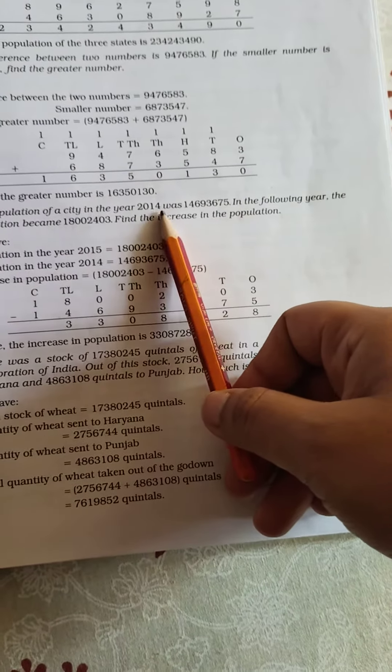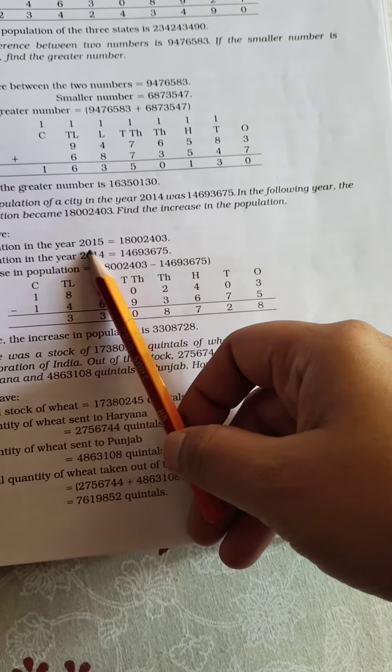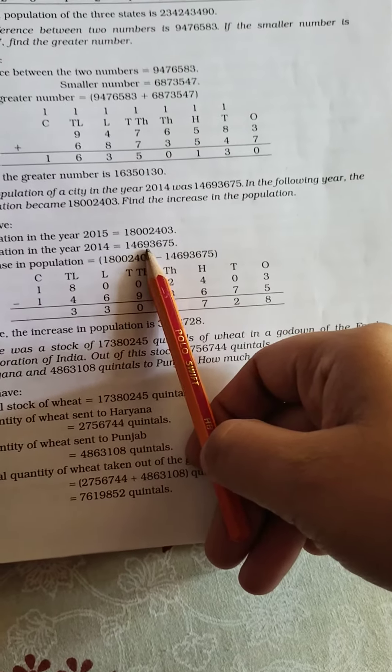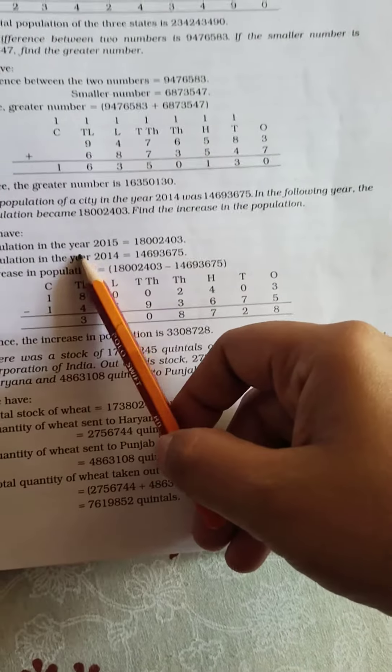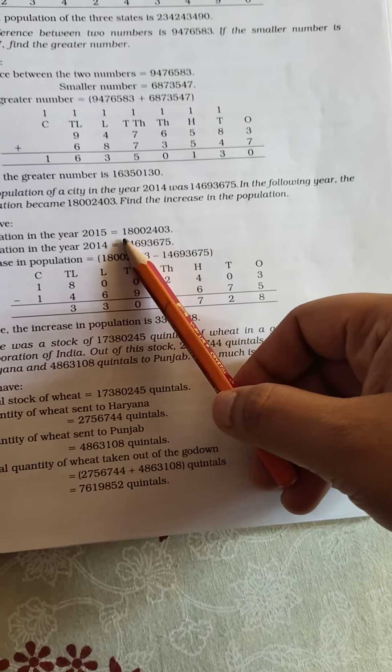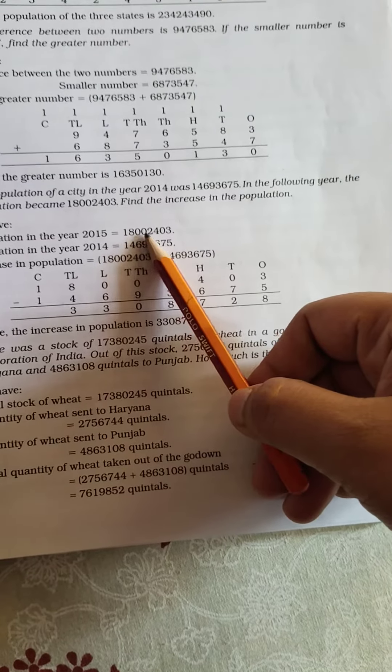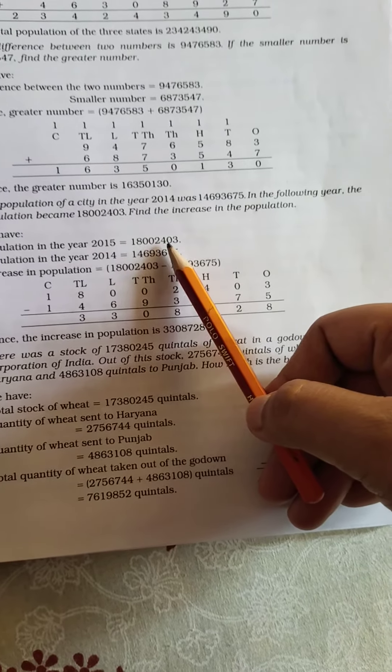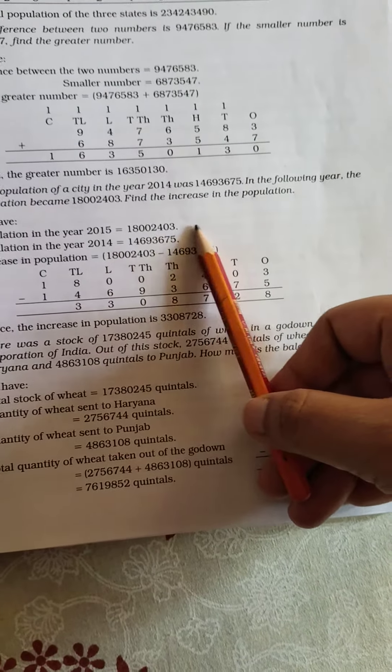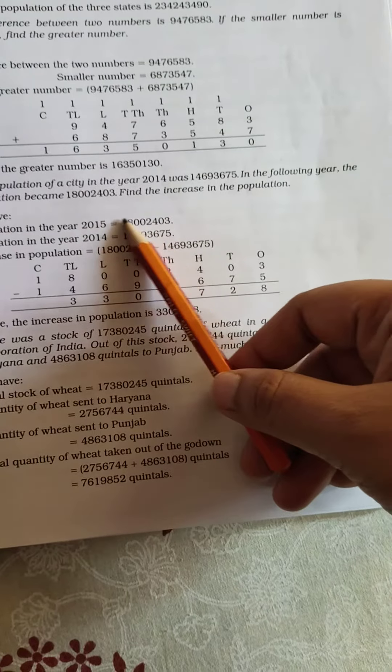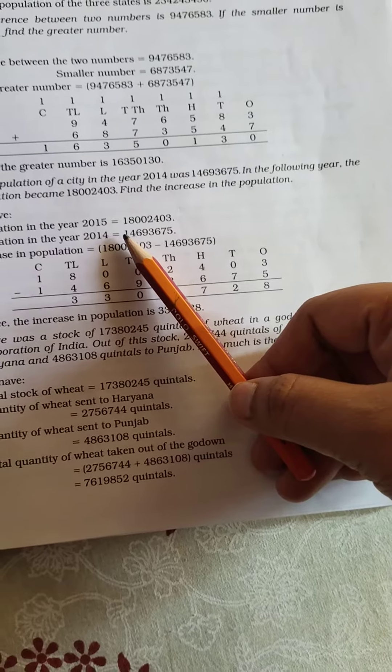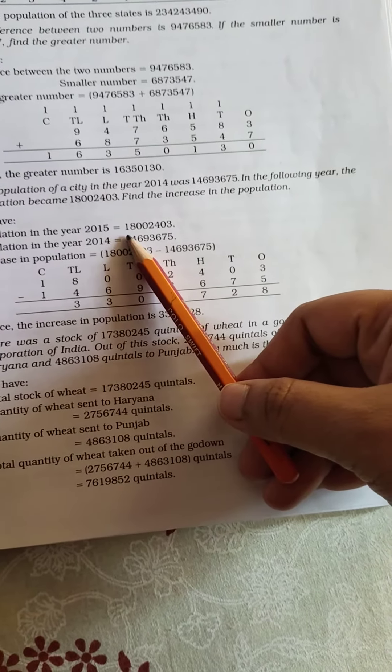So, the population of the city in 2014 was 1 crore 46,093,675 and in the year 2015, it became 1 crore 80,002,403. If we subtract this number of population from that, then we will get the increase. What increase in population happened during 2014 and 2015?